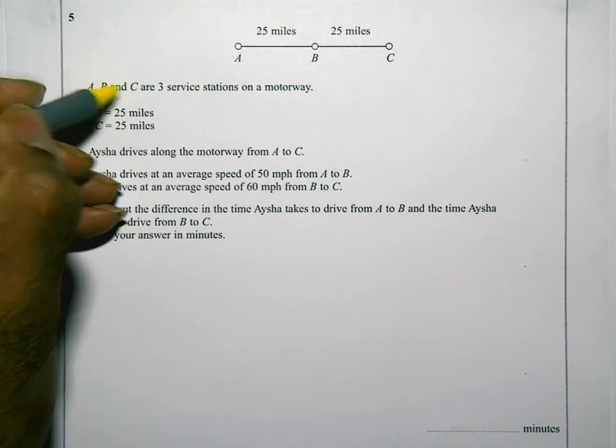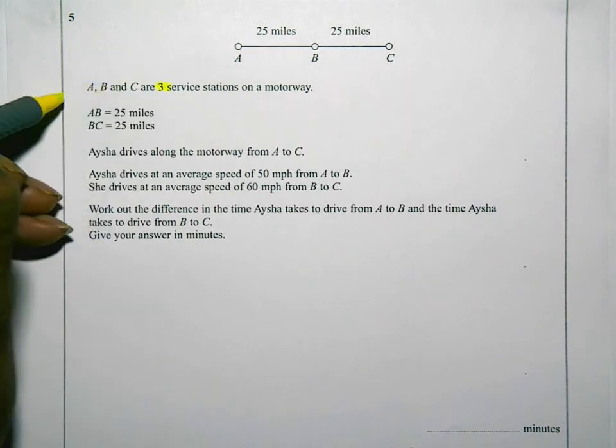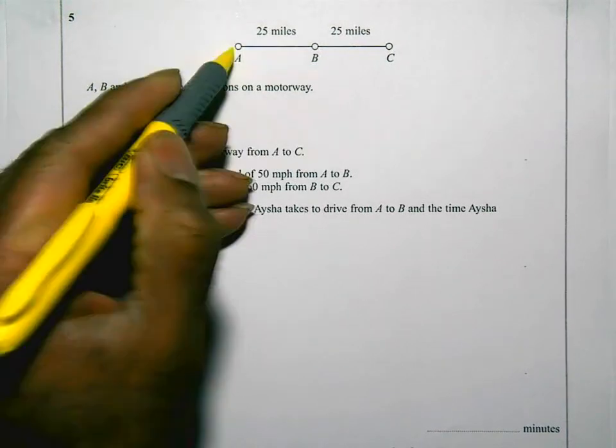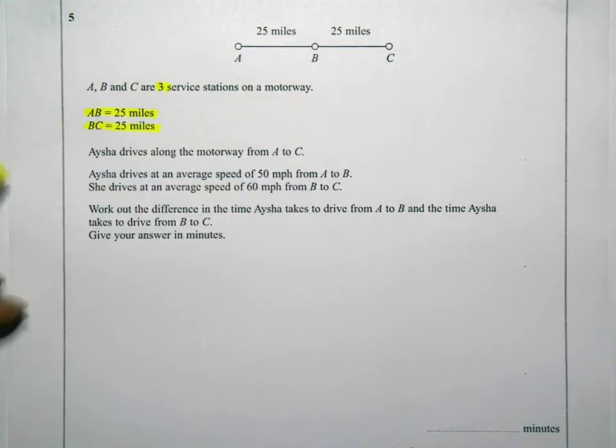B and C are three service stations on a motorway. AB is 25 miles and BC is 25 miles and I can see that information being put on the diagram above.